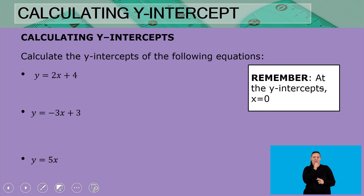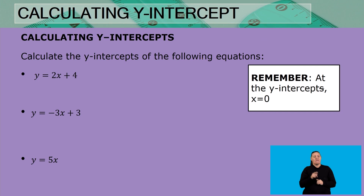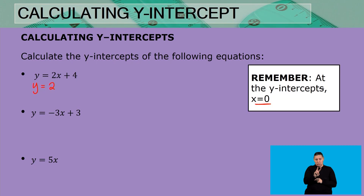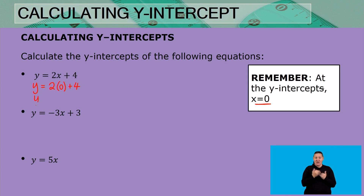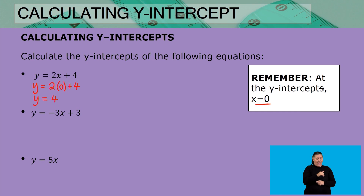Let's see how we can use that in calculating the y-intercept. Remember, at the y-intercept x is zero, so x is a value we know. I can say y is equal to two times x, and because x is zero I can calculate: y equals two multiplied by zero, which is zero, plus four, giving us positive four.